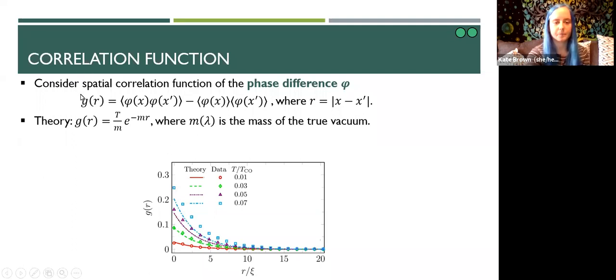The quantity that's of interest to us is the correlation function of the phase difference between our two atomic species, which is given by this formula here. Due to the stochastic nature of our equation of motion, these angular brackets denote not only spatial averaging, but also an average over 100 simulation runs. According to Klein-Gordon theory, the spatial correlation function should decay exponentially with rate m, where m here is the mass of our stable state. Also note that this pre-factor depends on both temperature and this mass.